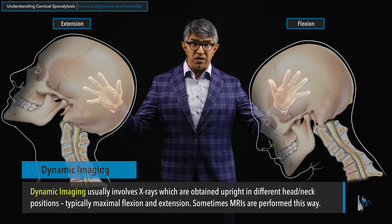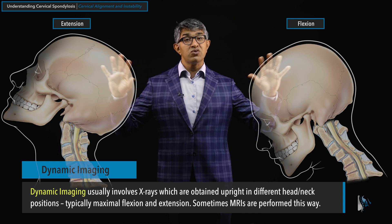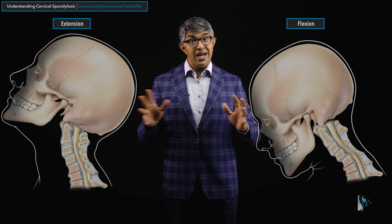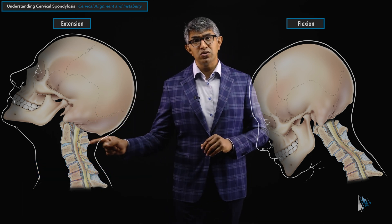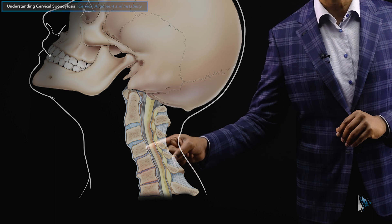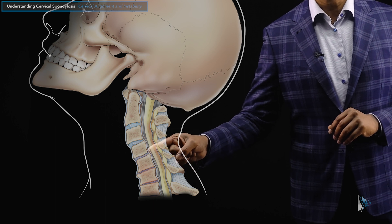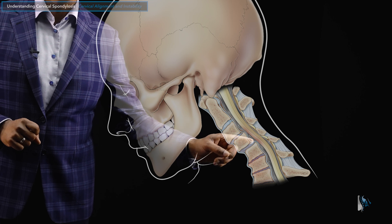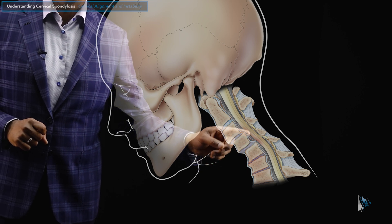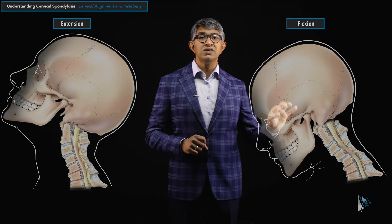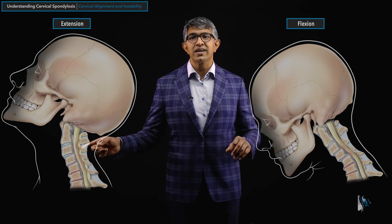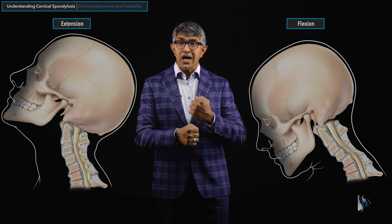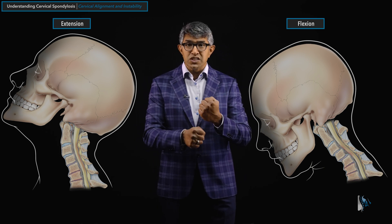Extension and flexion positions — those are the extremes — give you a sense of someone's total cervical range of motion. This illustration shows that when this person leans back, there's a little bit of slipping of some of the bones. But when they lean forward, you can see C4 really slips forward on C5 — we call that cervical instability. When they lean back, it reduces almost back to normal; when they lean forward, it slips forward. That's not normal. The spine is not supposed to slip like that.